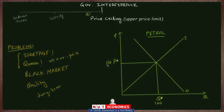If the government feels that this petrol is too expensive for consumers and wants to help them, they will intervene. Let's assume they place a price ceiling of 75 rupees. This price ceiling is an upper price limit on petrol imposed by the government — basically, nobody can charge a price of more than 75. Since the free market price was 150, which is above the maximum price ceiling, that price will not exist anymore. The maximum limit of 75 is the price that will now operate in the market.